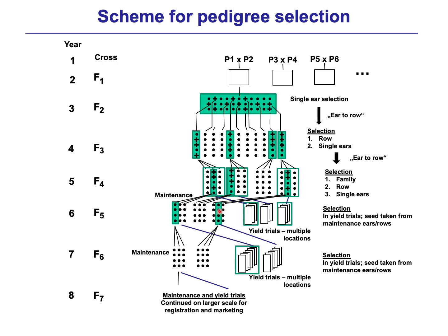For maintenance breeding we take one row per family out of the F5 maintenance breeding and put it into further multiplication in the F6 generation. Once again no selection here — we select in the yield trials. We take the seeds of the selected F6 line from the yield trials to continue the breeding scheme with further maintenance, yield trials, and the next step: registration trials.